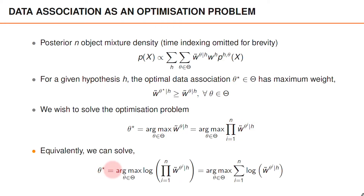We can solve for the argument that maximizes the logarithm of the product of the weights, and this evaluates to the sum of the logarithm of the weights for each object's association. The reason that we can apply the logarithm and still have the same optimization problem is that the logarithm is a monotonically increasing function.